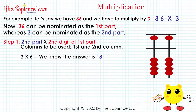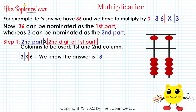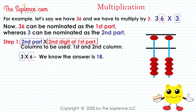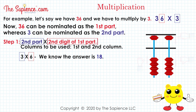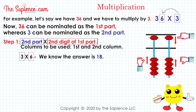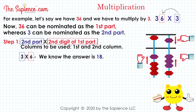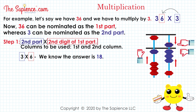Step 1: second part multiplied by second digit of first part. Columns to be used: first and second column. 3 multiplied by 6, we know the answer is 18. Now we will add 18 onto the first and second columns.